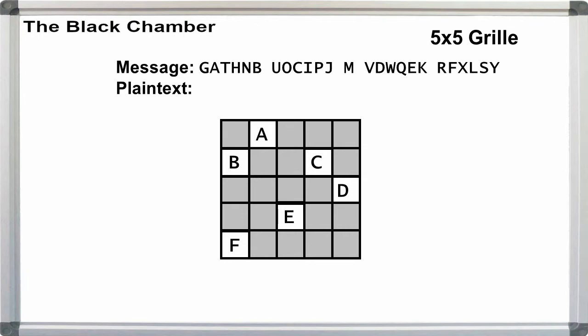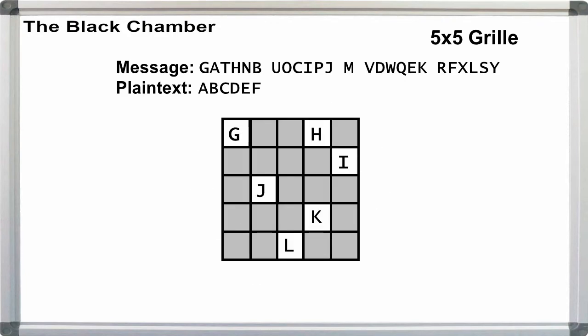Starting from top left to bottom right, write down the letters showing through the openings in the grill. Rotate the grill 90 degrees clockwise and write down the next set of letters.